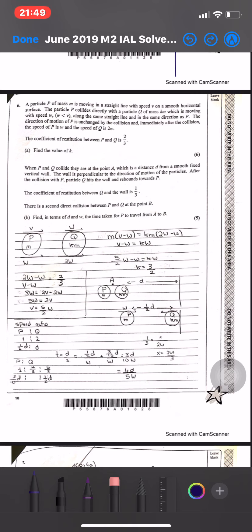Here we have a particle P of mass M moving in a straight line with speed V on a smooth horizontal surface. The particle P collides directly with a particle Q of mass KM which is moving with speed W, where V is greater than W, along the same straight line and in the same direction as P.